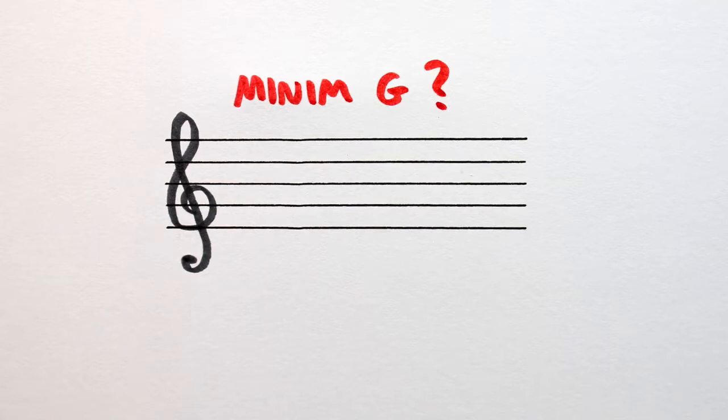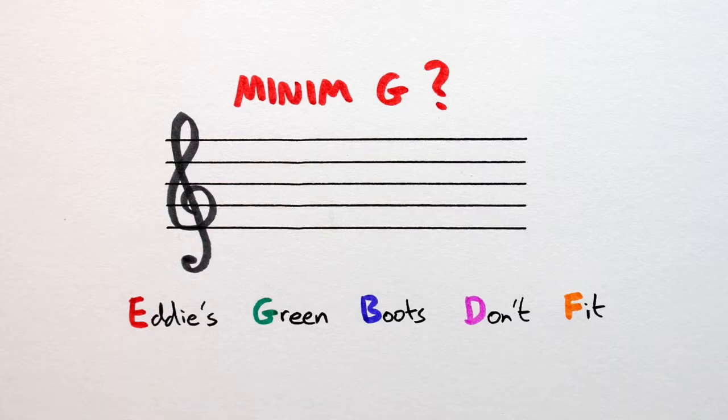Because it's a treble clef, we can use the Eddie's green boots don't fit rhyme. Starting on the bottom line, we say Eddie's, green. G for green, so our note can go on this second line.